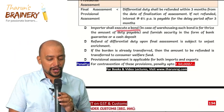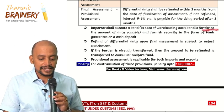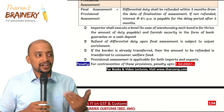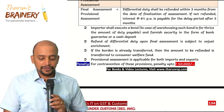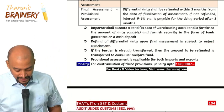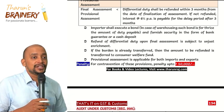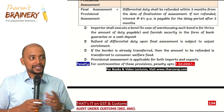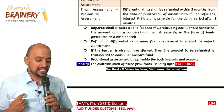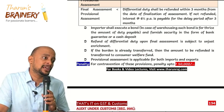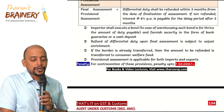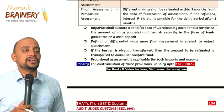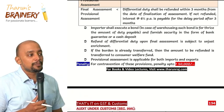The importer shall execute a bond. In case of warehousing, such bond is for thrice the amount of duty payable, with security furnished in the form of a bank guarantee. The refund of differential duty upon final assessment is subject to unjust enrichment — meaning we need to prove that we have not transferred the burden to the next person. If the burden is already transferred, the refund amount will not be given to us; it will be transferred to the Consumer Welfare Fund. Provisional assessment is applicable for both imports and exports, and the penalty for contravention of any provisions is up to ₹50,000.